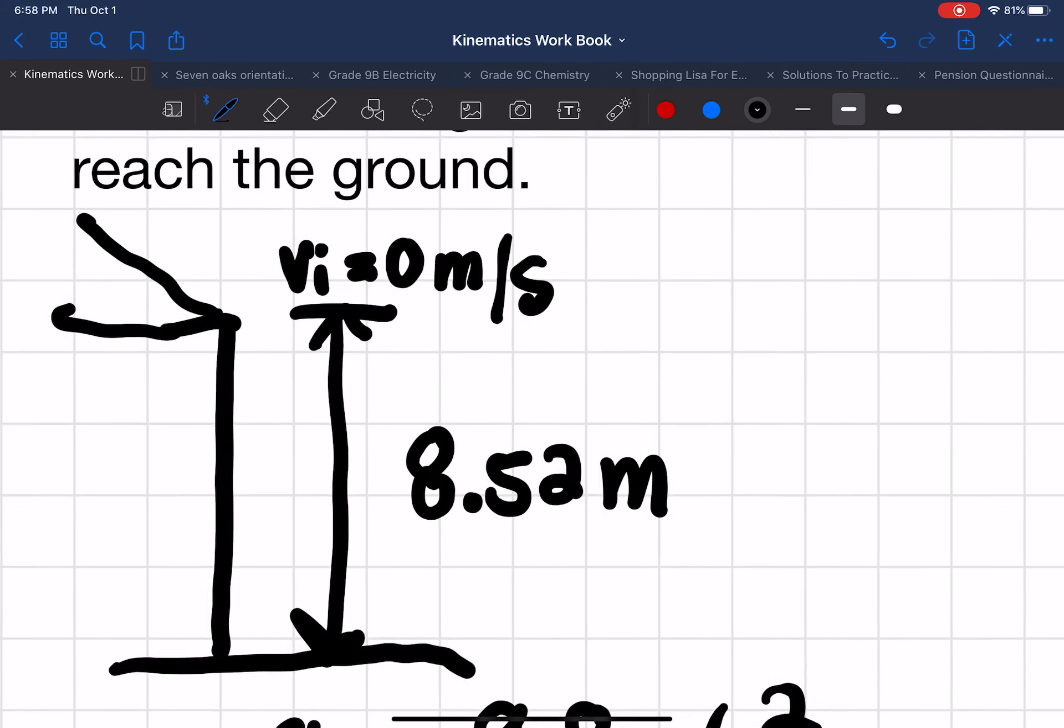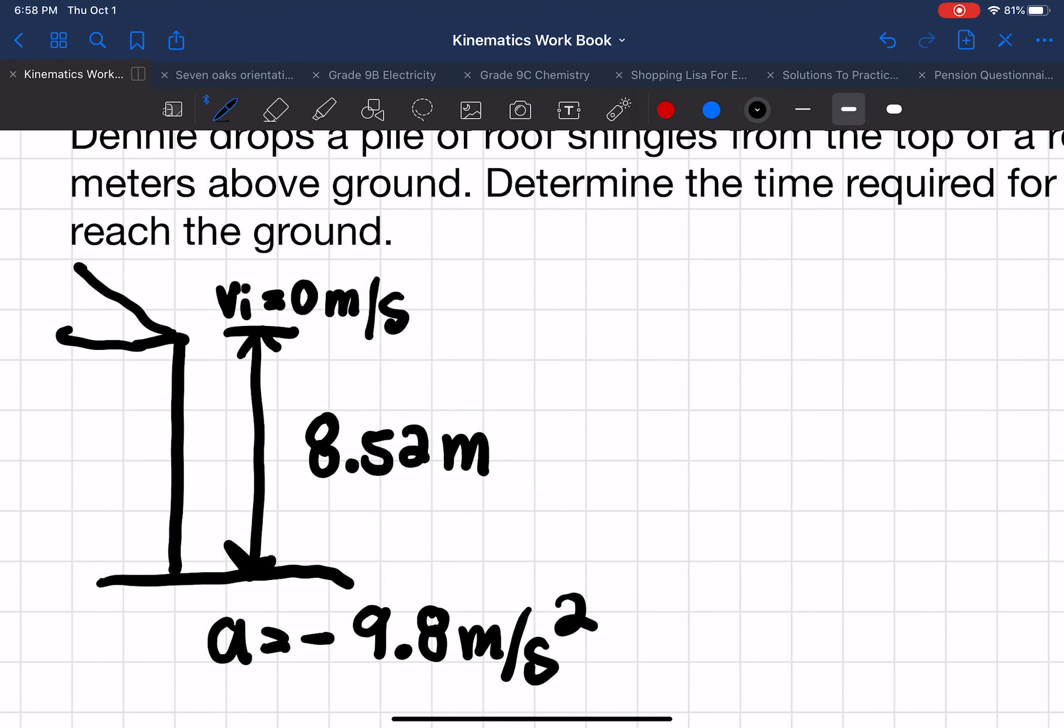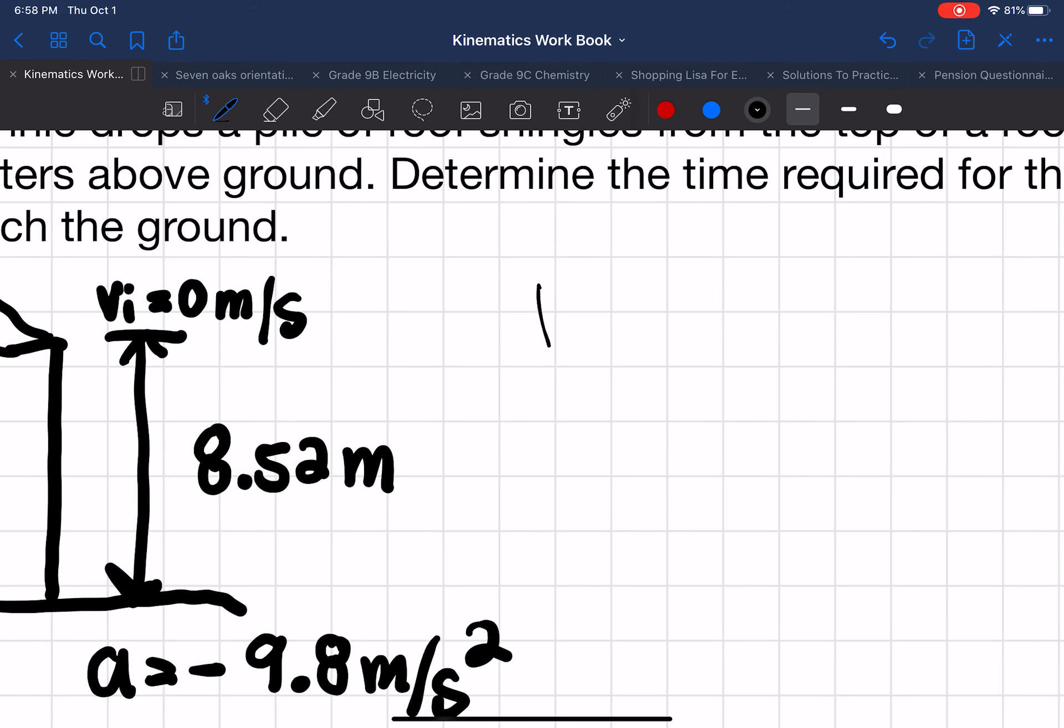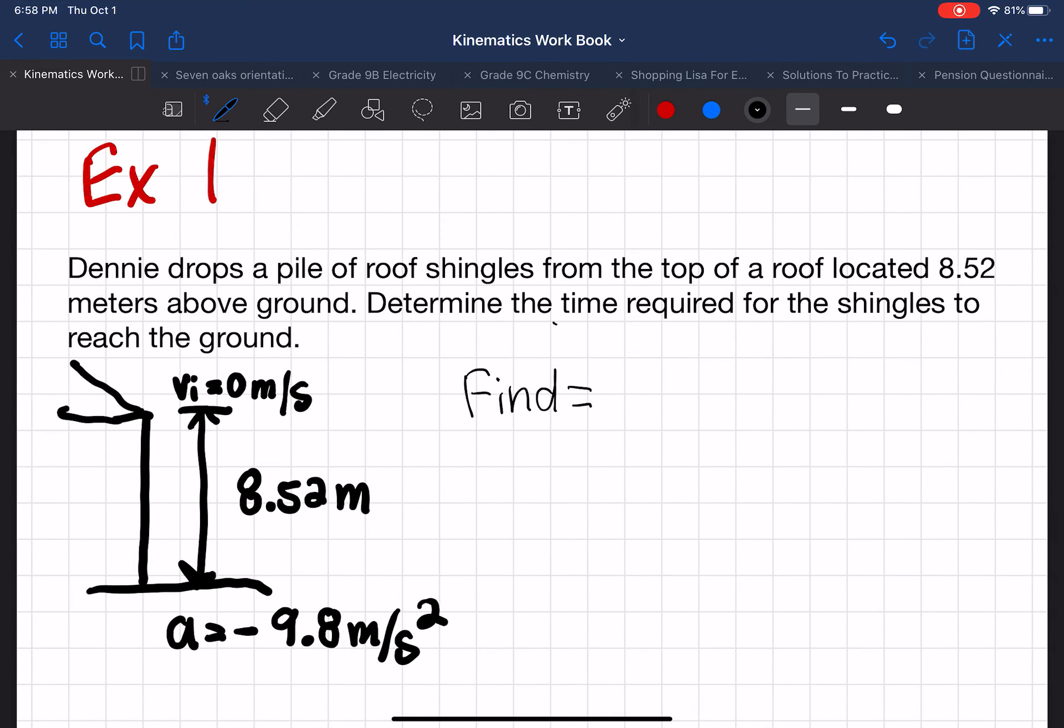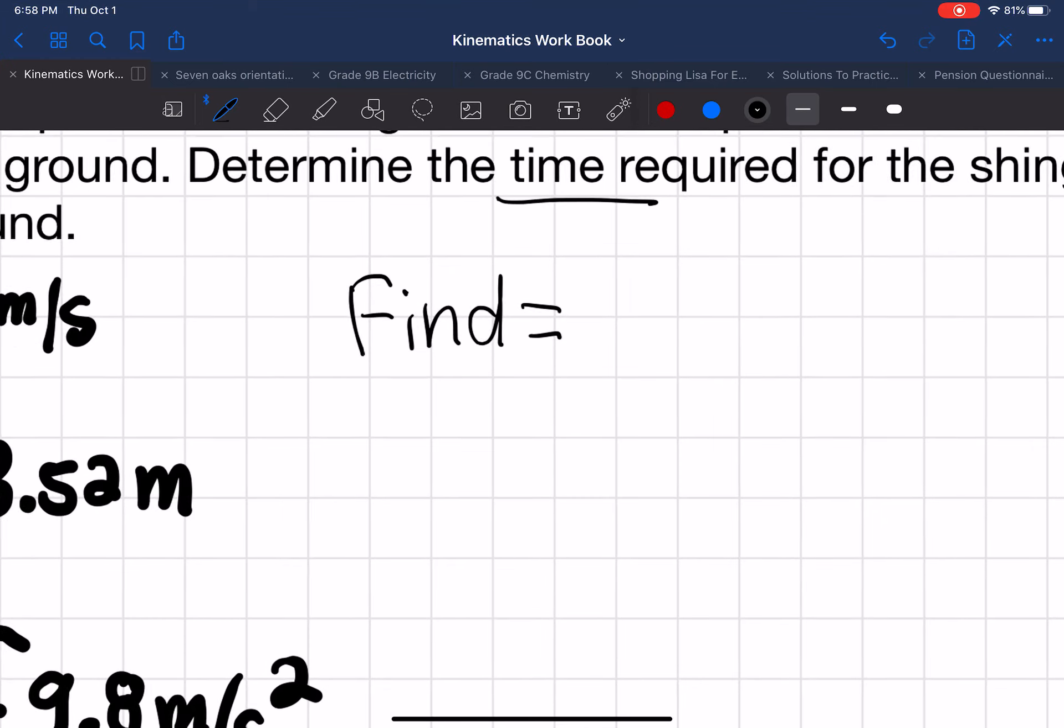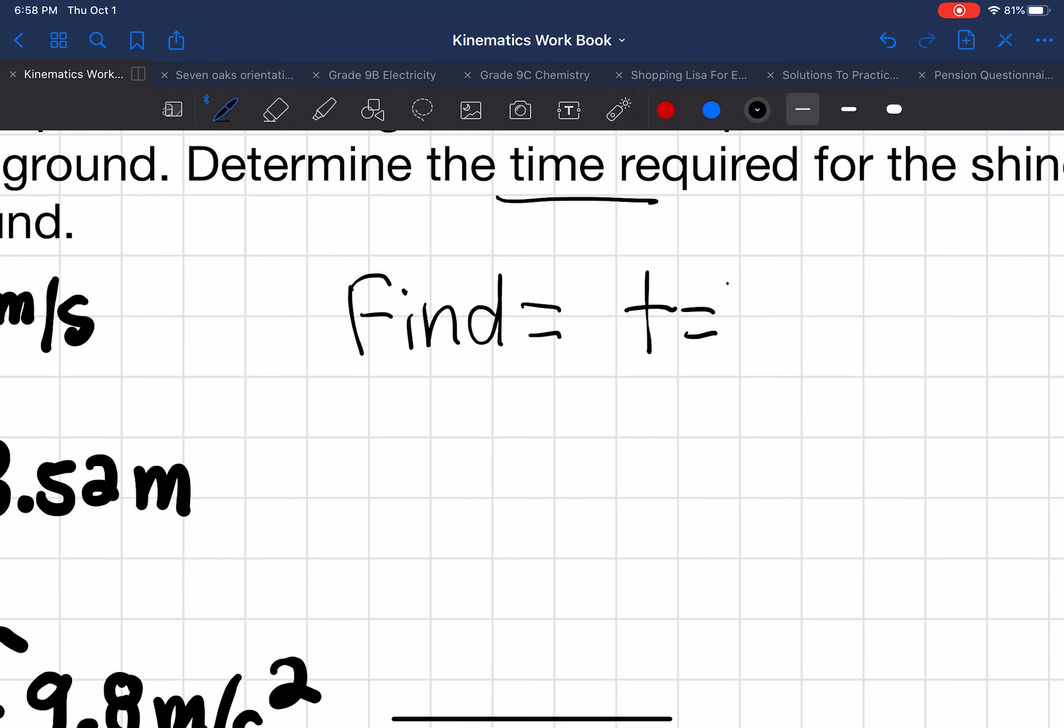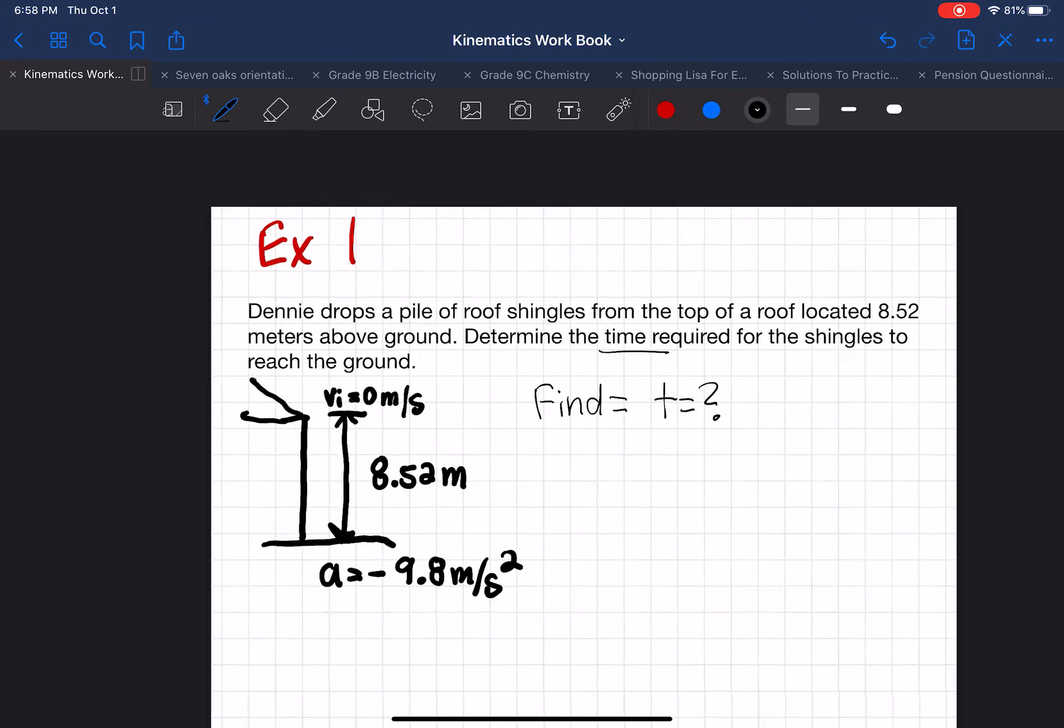Now we have to identify what is the unknown variable. So we are finding, in the question itself, it tells you the unknown variable. We are looking for time. We don't know what time is.